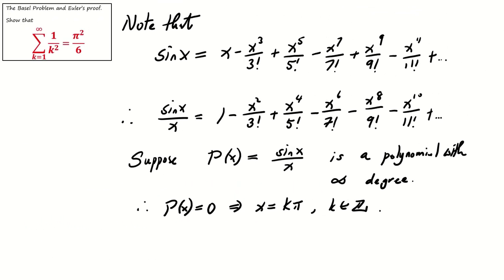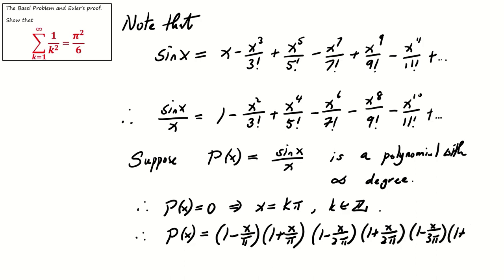Let's continue our proof by Euler. Since p(x) equals 0 implies x equals k pi for integer k, we can express p(x) as (1 minus x over pi) times (1 plus x over pi) times (1 minus x over 2 pi) times (1 plus x over 2 pi) times (1 minus x over 3 pi) times (1 plus x over 3 pi), and so on.